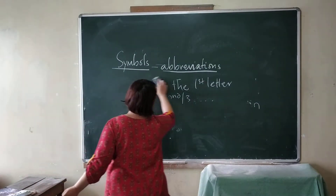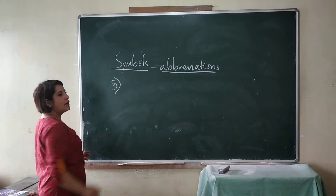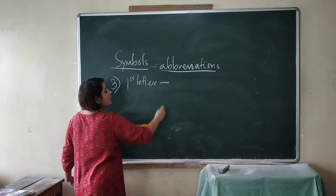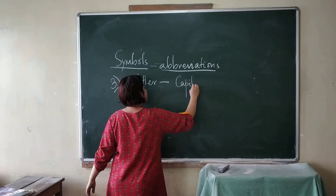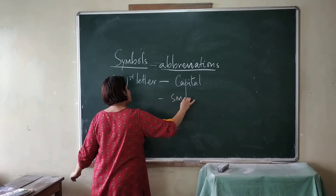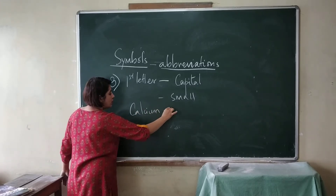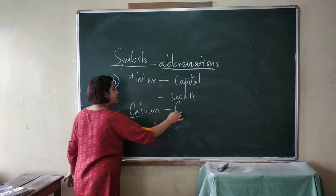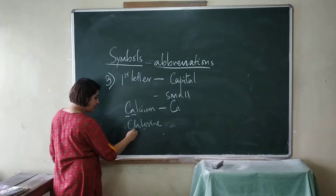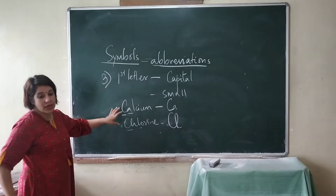The third rule: if you have noticed, the first letter is always written in capital. And the next letter is always written in small. Like calcium — first letter capital C, second letter small a. Chlorine — capital C, small l. This is the third rule.